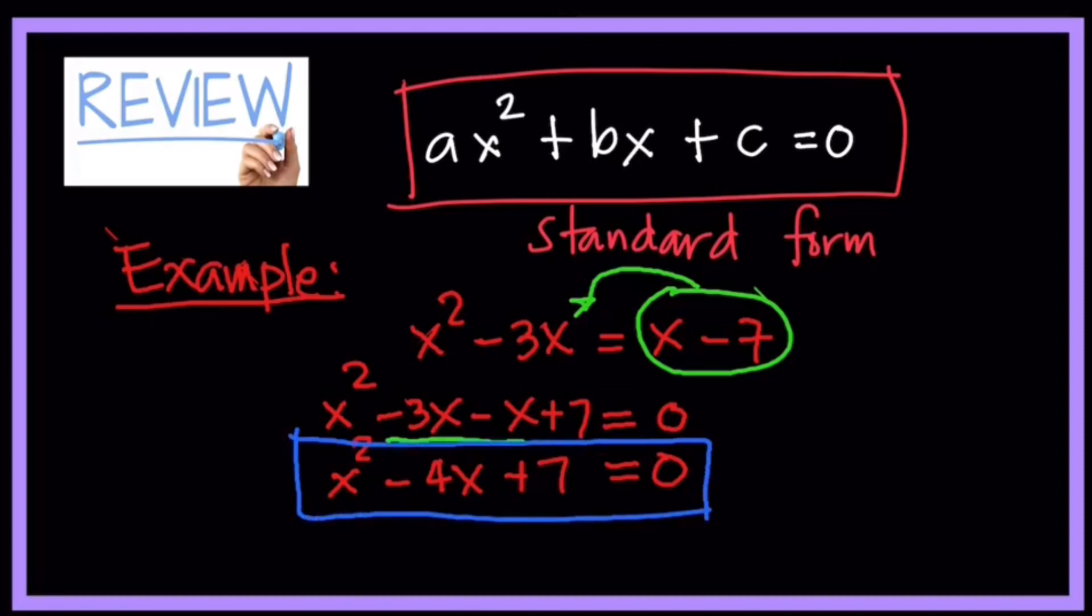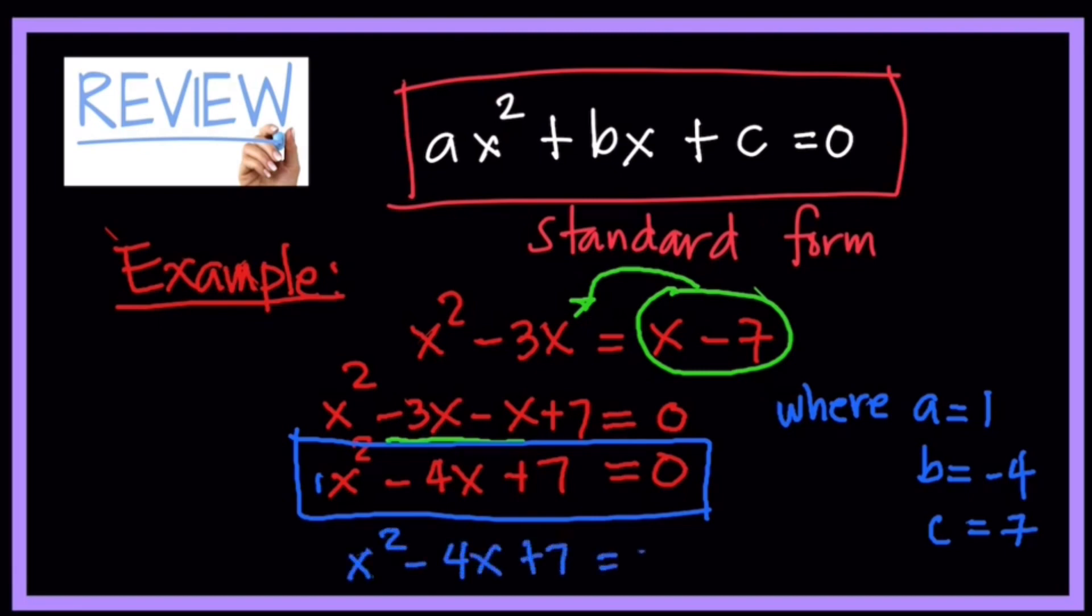Where our coefficients, numerical coefficients, where a is equal to 1, and then b is equal to negative 4, where c is also considered as the constant, which is 7. So the equation now in standard form is x squared minus 4x plus 7 is equal to zero. So that is the equation in standard form.